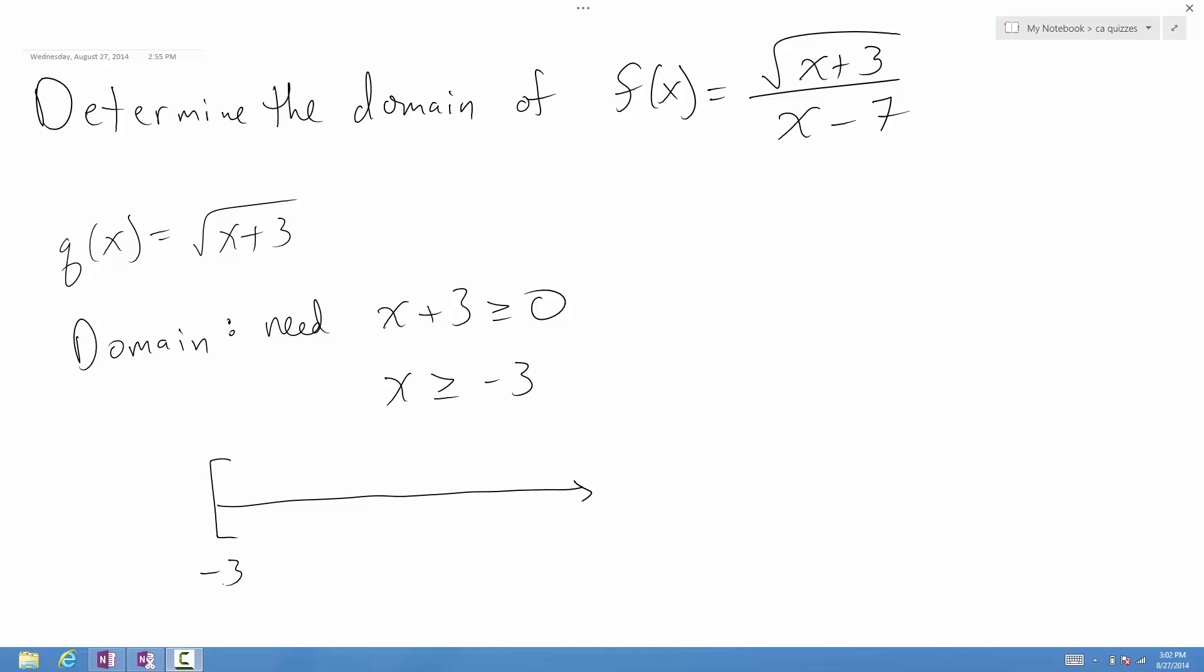But now the issue is we also have this x minus 7 in the denominator. So we know that since we're not allowed to divide by 0, we now also know that x cannot equal positive 7. And so there's sort of a break here when x equals 7.